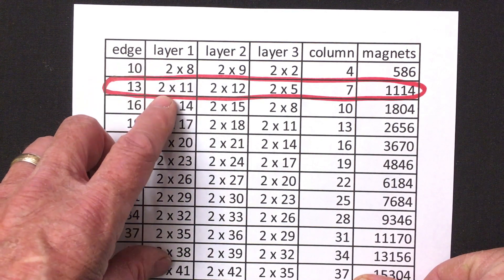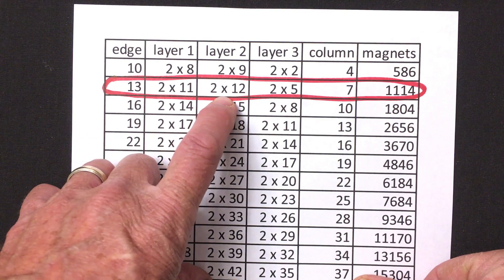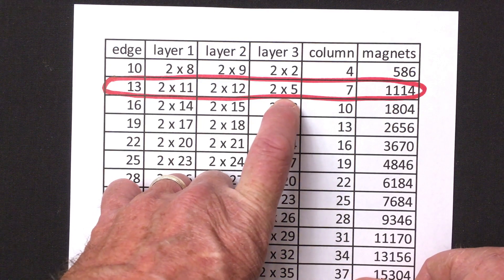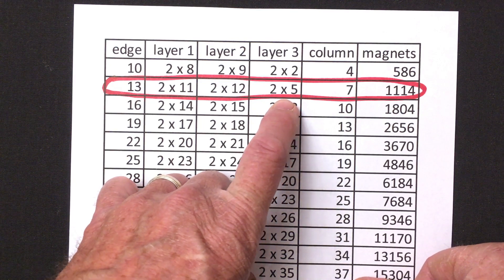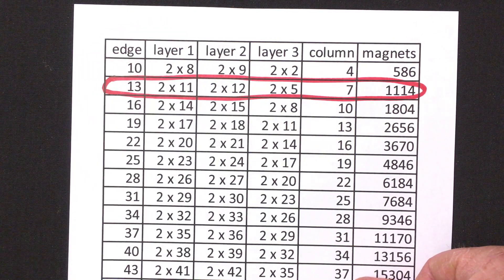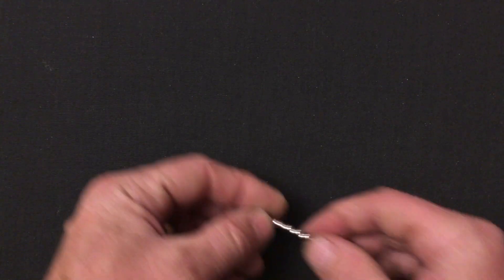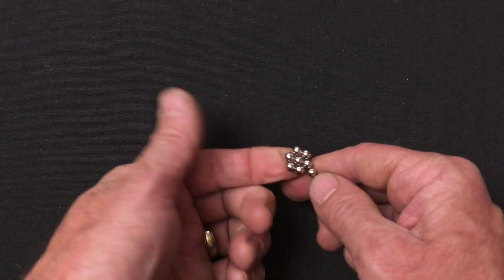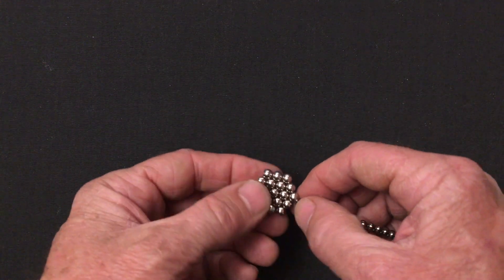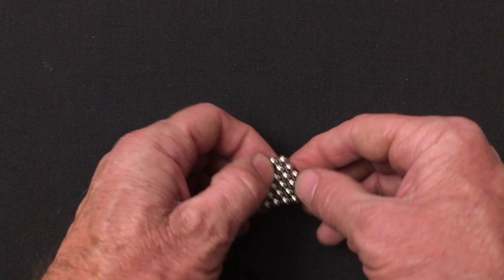So the layer 1 always starts off with a filled hexagon and that's what we'll do to build this 2 by 11 layer. Layer 2 starts off with the 3-magnet triangle and layer 3 again starts off with a filled hexagon. So let's try and that's true all the way down the line here. Start with the filled hexagon, 3-magnet ring and filled hexagon. All right 2 by 11, 2 by 12 and 2 by 5. See if we can do this. There's a filled hexagon with three sides on it. Add two magnets to every other side. Then add another ring.